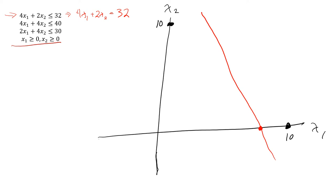That's just the line — remember, my constraint is less than or equal to 32, so I'm limited to only one side of this line. To determine which side, I take the point (0, 0) and check if it satisfies the constraint. Plugging zero into 4x1 plus 2x2 gives zero, which is less than or equal to 32, so yes it does. That means I'm looking at everything on the origin side of the line — everything on that side satisfies my constraint, everything on the other side violates it.